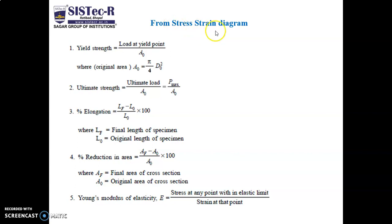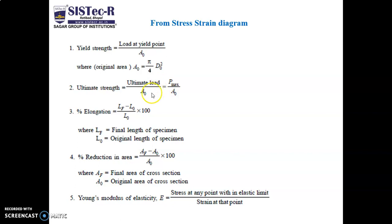From the stress-strain diagram, we can calculate: yield strength equals load at the yield point divided by A0, where A0 is the original area, calculated as A0 equals pi over 4 times D0 squared. Ultimate strength equals ultimate load (maximum load, P_max) divided by A0, the original area.